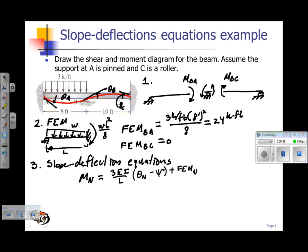So we want to apply this equation first from point or support B to A. My span B to A is 8 feet times theta near, in this case it's going to be theta B, and then the chord rotation is zero so we don't include that. And my fixed-end moment is positive 24 kip feet.